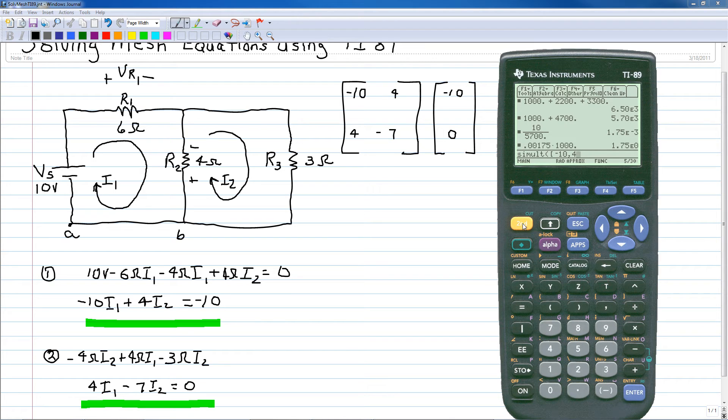Now we need a semicolon to separate that. Now we want to go to the second line and pick up the second set of coefficients, which would be 4, comma, and -7. And now we want to close that brace, which is second and the divide sign.